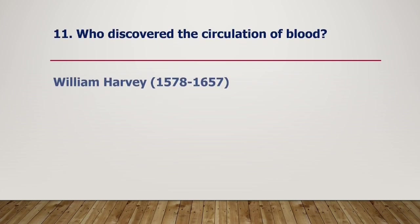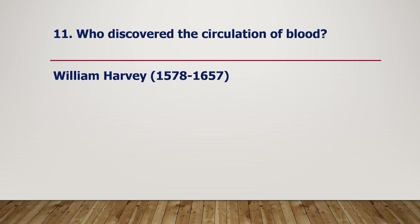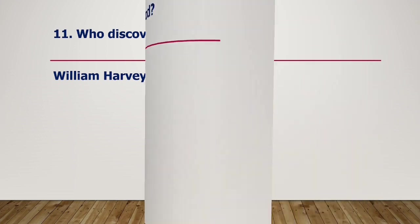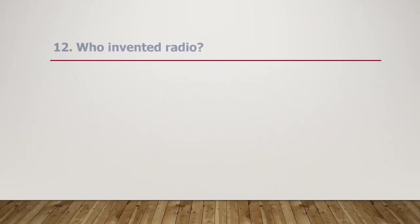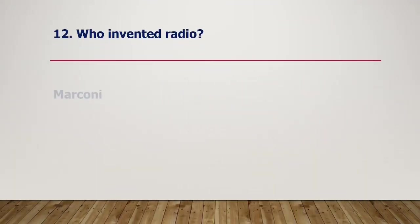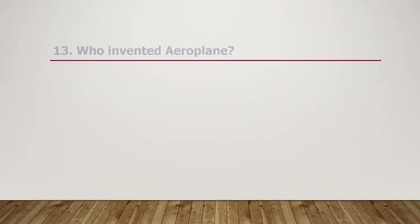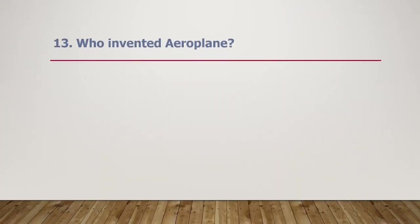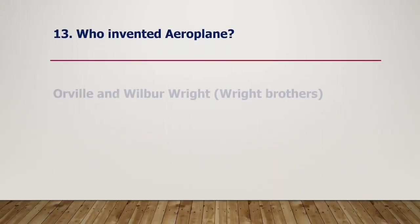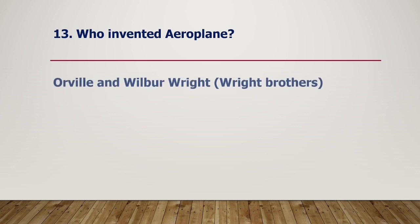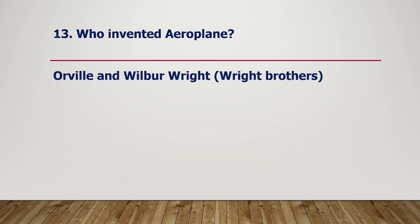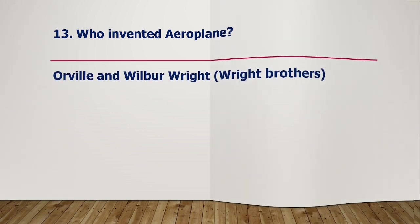Who discovered the circulation of blood? William Harvey, 1578–1657. Who invented radio? Marconi. Who invented the aeroplane? Orville and Wilbur Wright, also known as the Wright brothers.